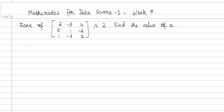To find the rank of a matrix, we use the row elimination method. So let's do that and find the value of a. Our matrix is [2, -3, 4; 0, 1, -2; 1, -3, a].